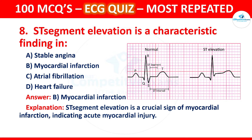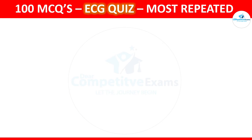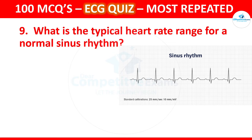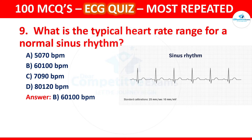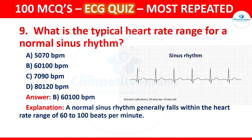Question 9: What is the typical heart rate range for a normal sinus rhythm? Options are 50–70 bpm, 60–100 bpm, 70–90 bpm, or 80–120 bpm. The correct answer is 60–100 bpm. A normal sinus rhythm generally falls within the heart rate range of 60 to 100 beats per minute.